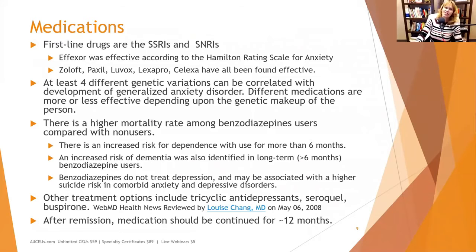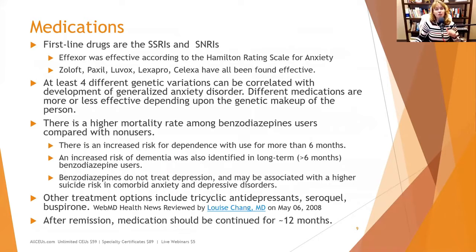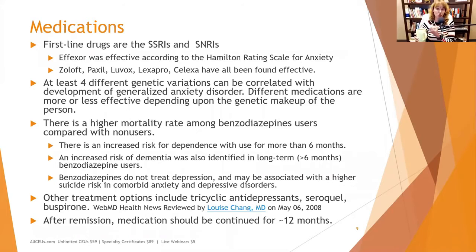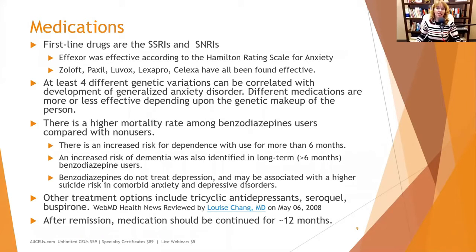The first-line medications are SSRIs — Selective Serotonin Reuptake Inhibitors — and SNRIs — Selective Norepinephrine Reuptake Inhibitors. SNRIs also increase available serotonin, though the mechanism of action is different. Each SSRI also has a slightly different mechanism, which is why someone can have an awful experience on Prozac but a much better one on Zoloft. Zoloft, Paxil, Luvox, Lexapro, Celexa, and their generics have all been found effective at treating anxiety in certain people, though no one medication works for everybody.